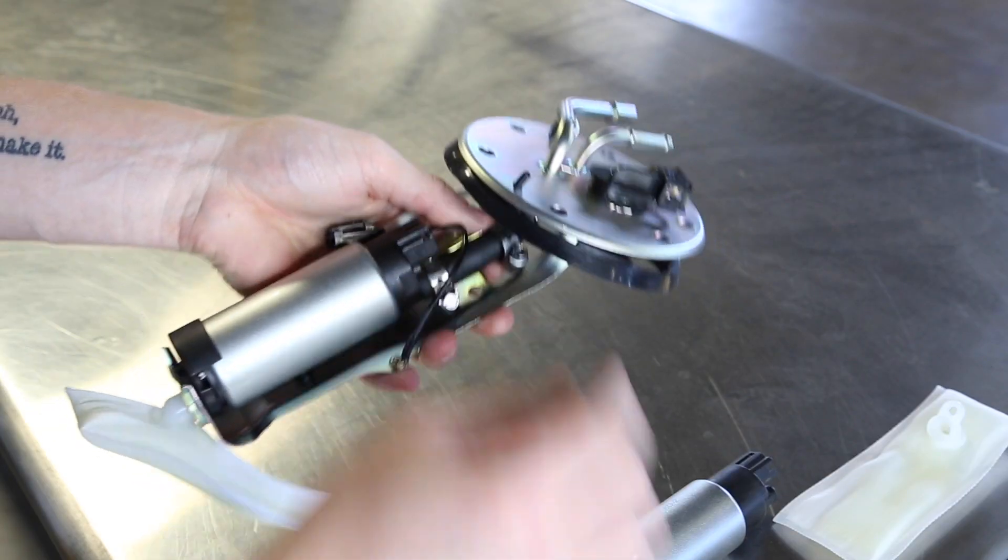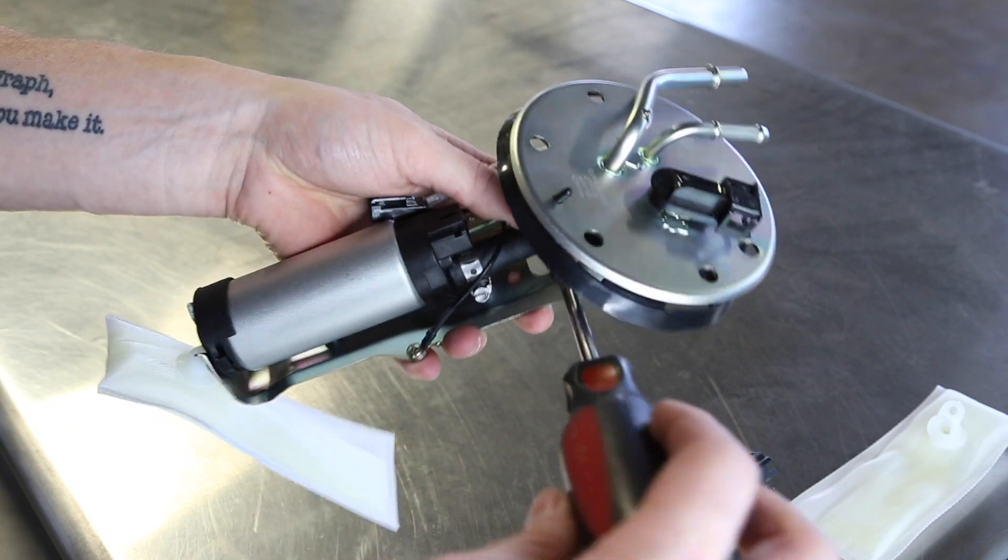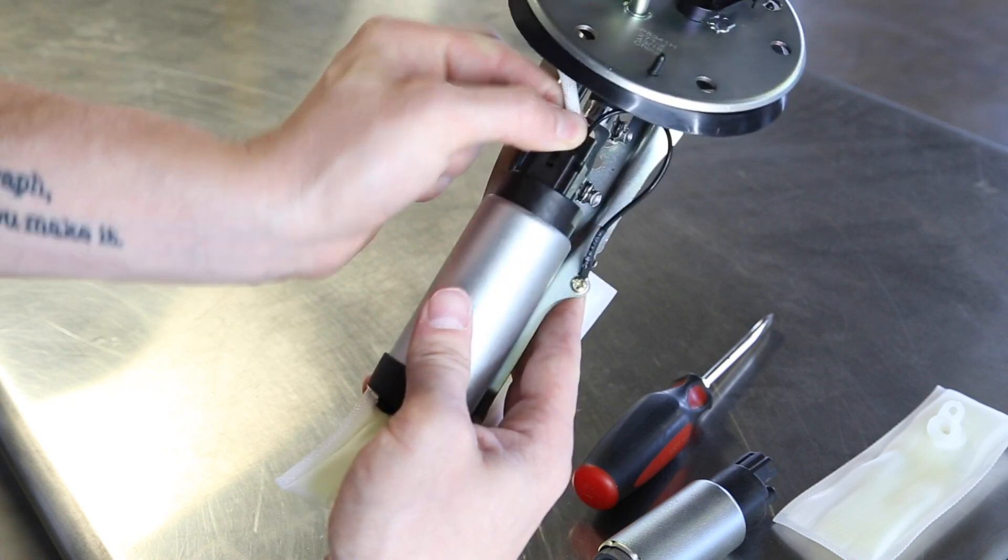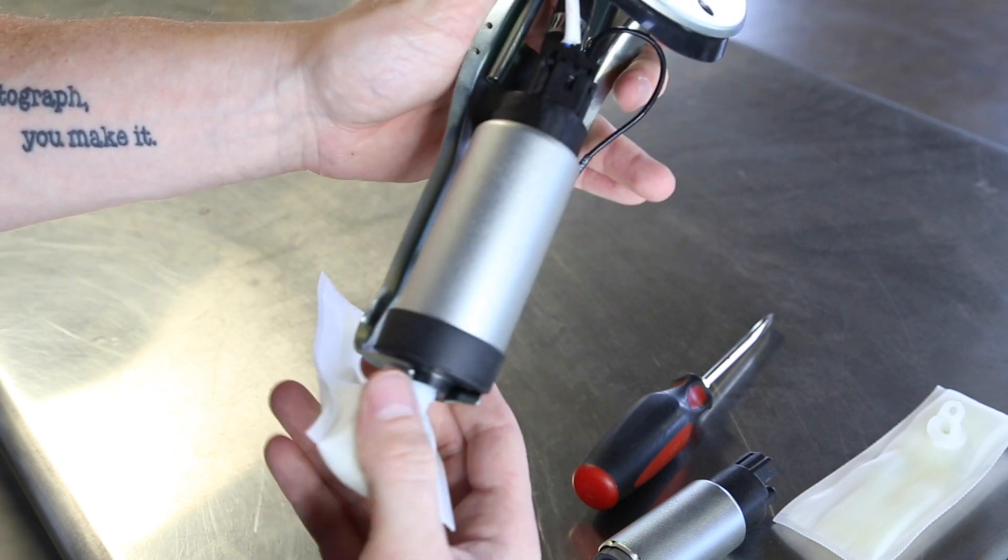Tighten down the hose clamps and then plug in the electrical connector. You are now ready to reinstall the assembly into the fuel tank.